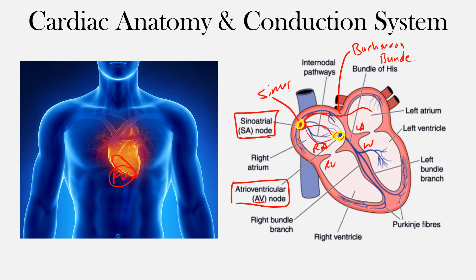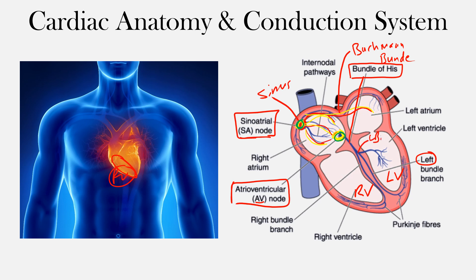The impulse generates at the sinus node, depolarizes through the atria via the conduction system to the AV node. From the AV node, conduction comes down through what we call the His bundle, or bundle of His. From the His bundle there are branches: the left bundle branch on the left side of the heart and the right bundle branch on the right side.